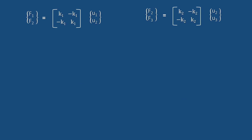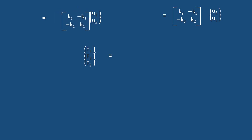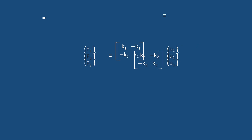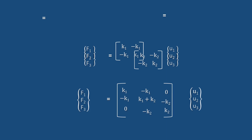Let's assemble the individual matrices. First, the force matrices [F1, F2] and [F2, F3] combine into a column matrix of [F1, F2, F3]. Next, the stiffness matrices [K1, -K1; -K1, K1] and [K2, -K2; -K2, K2] are assembled — the intersection element becomes K1 plus K2, and the vacant spaces become 0. The displacement matrices [U1, U2] and [U2, U3] combine accordingly, giving the final assembled stiffness matrix.